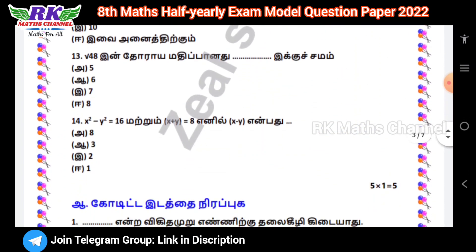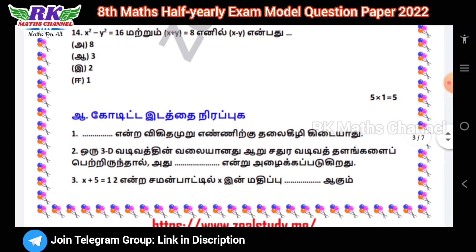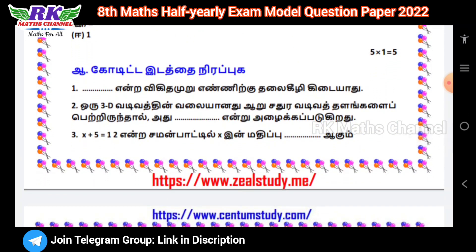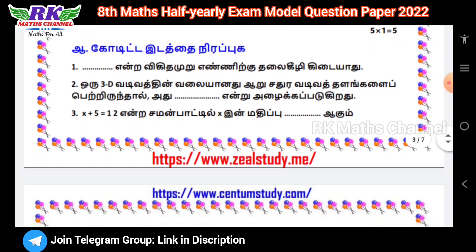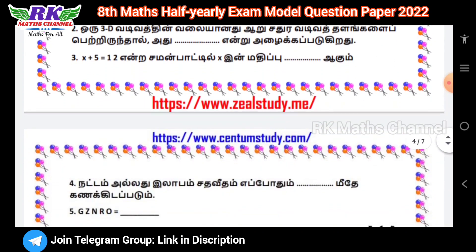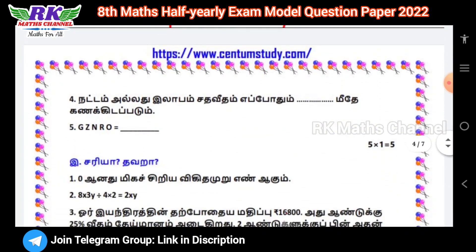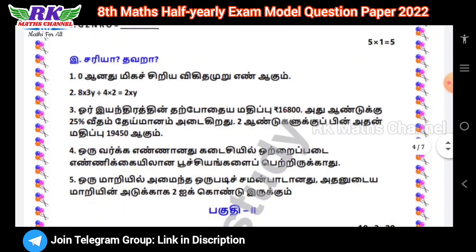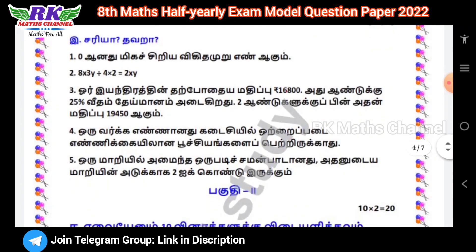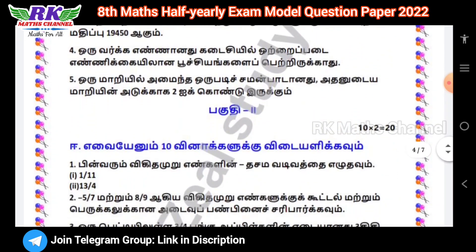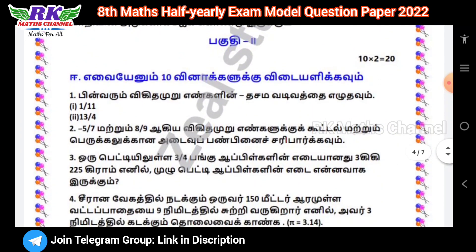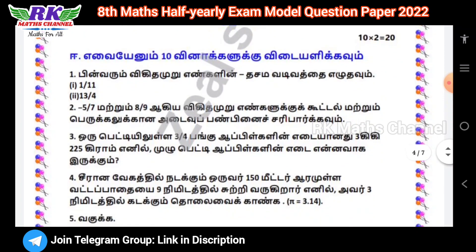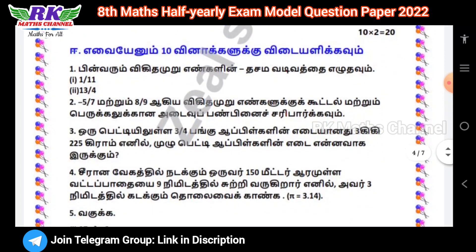14 bits total: fill in the blanks — 5, true or false — 5. Then 2-mark questions: 10 questions total, 2 marks each.